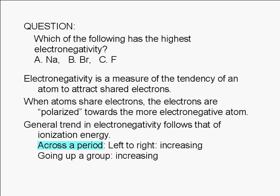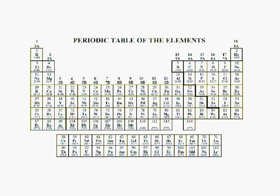Across a period from left to right, and going up a group, electronegativity increases. Here's a periodic table. Here's sodium, here's bromine, and here's fluorine.